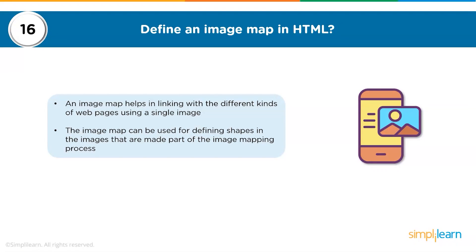The sixteenth question: define an image map. An image map in HTML helps in linking to different kinds of web pages using a single image. It can be used to define spaces in images that are made part of the image mapping process.